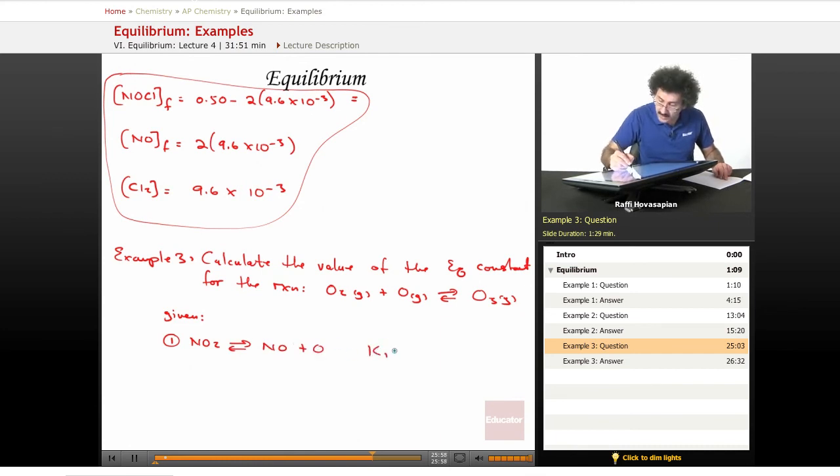K1 is equal to 6.8 times 10 to the negative 49. Wow, that's really really small. And reaction two, which is O3 plus NO goes to NO2 plus O2, K2 equals 5.8 times 10 to the negative 34.